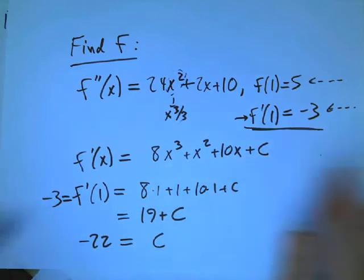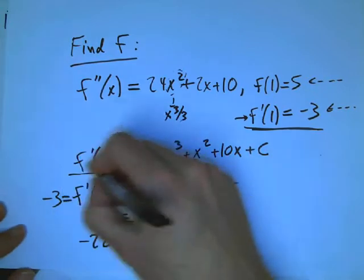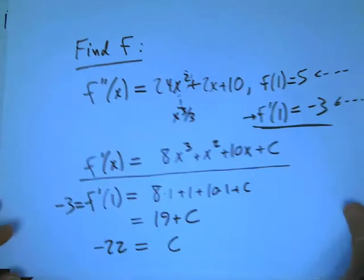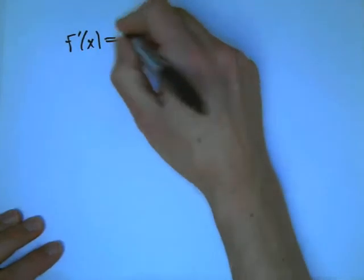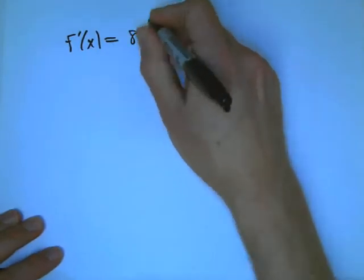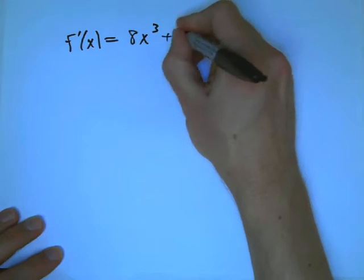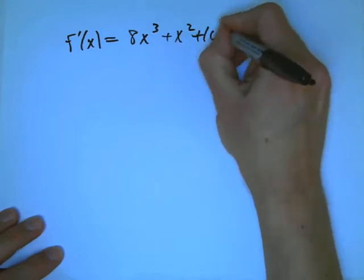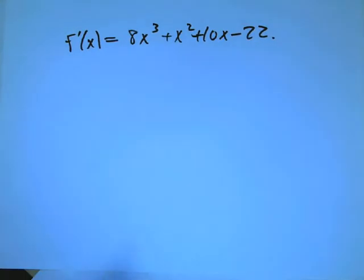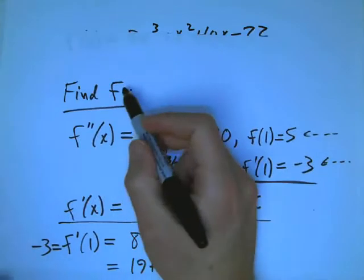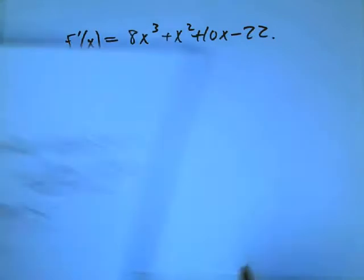So what we do is we immediately rewrite our f prime before we go on with that explicit c. So now we actually know exactly what f prime of x is: 8x cubed plus x squared plus 10x minus 22. Now we're ready to anti-differentiate again. Our goal was to find f based on information about its second derivative.